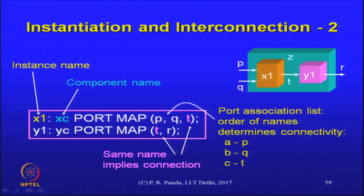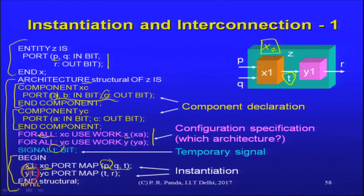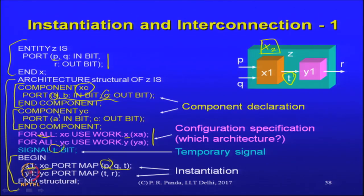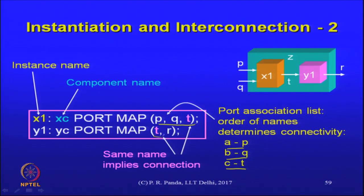The component name is what we have declared — we choose both the entity name and the component name, and the instance name is of course given by us. For Y1, the corresponding component has A and C: one input and one output, both of bit type, and we have specified T and R — T is the intermediate signal, R is the output port from Z. That completes our hierarchical specification. The existence of the same signal name in two different port maps implicitly establishes a connection between those two ports through that intermediate signal. P, Q, R are externally visible ports and need no further declaration, but T had to be declared internally as a signal not visible outside.